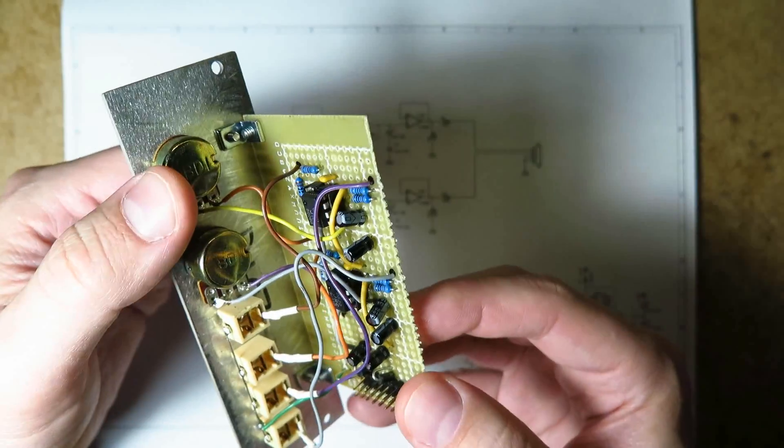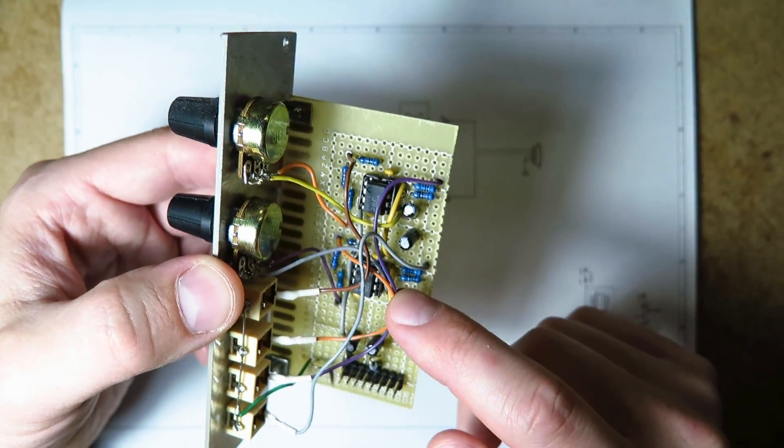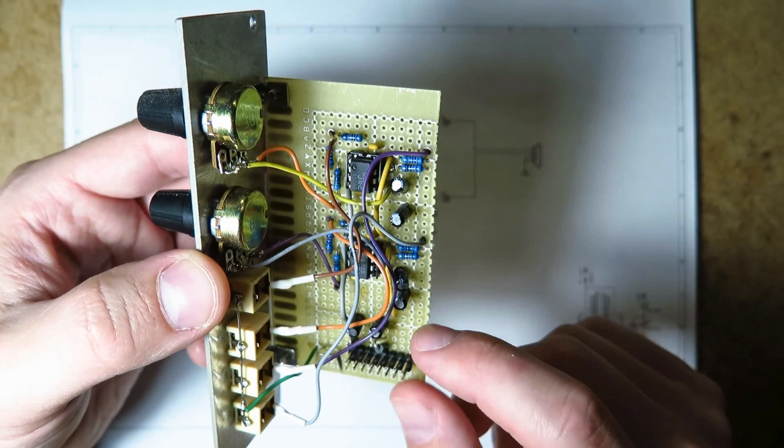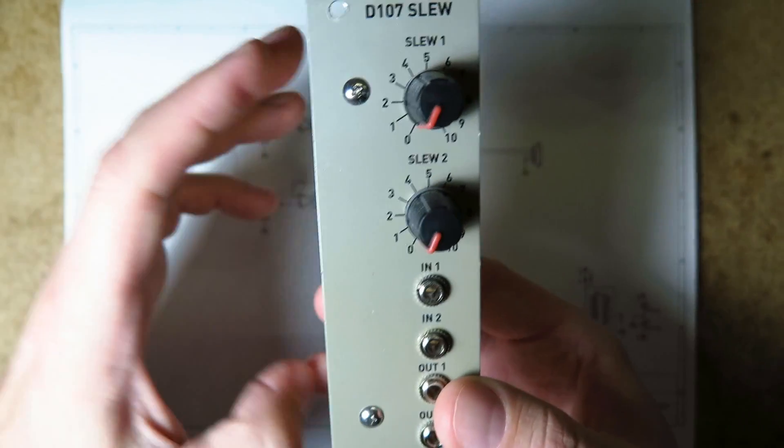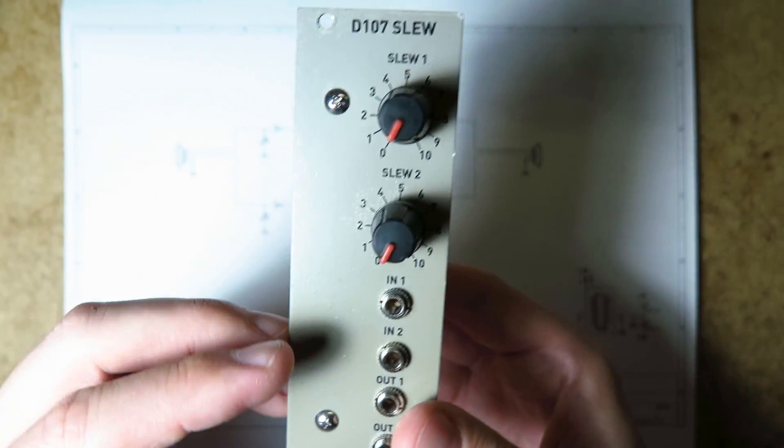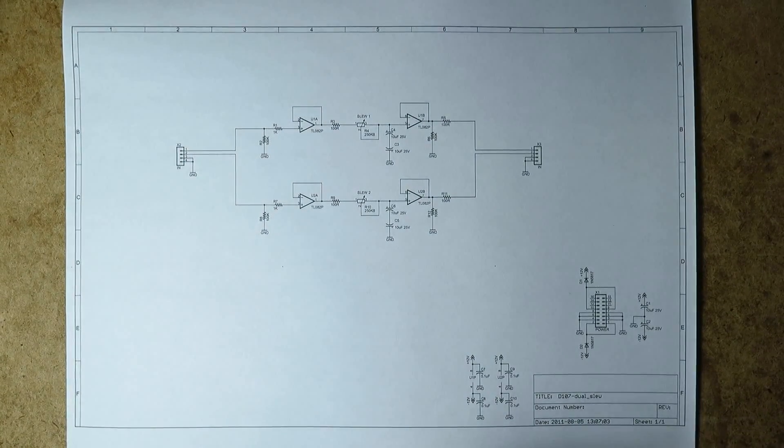You can see it only has four jacks and two pots, two little dual op amps and some handful of other circuits. So I'm going to give you a little look at the schematic and try to explain how it works.